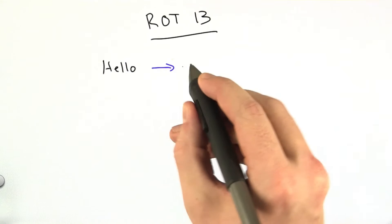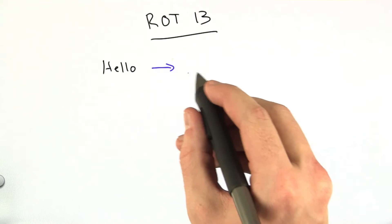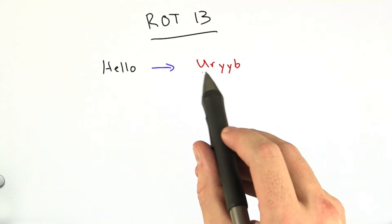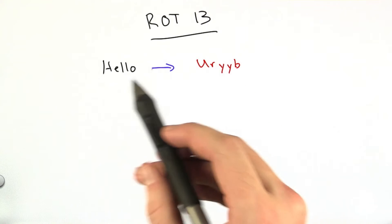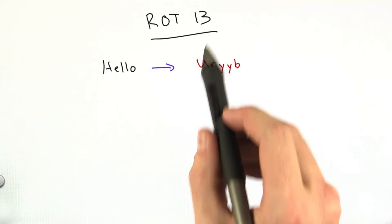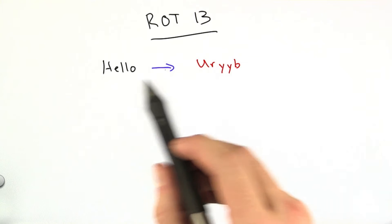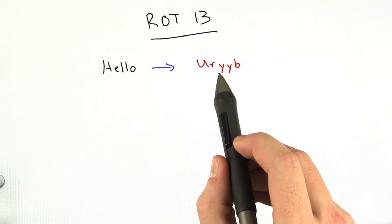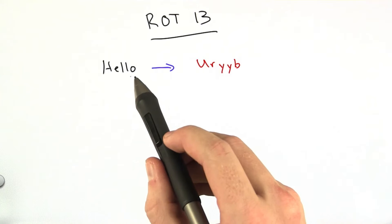Okay, if I were to take this string hello and apply rot13 to it, it would look like this: U, R, Y, Y, B. And what I've done is I've incremented every letter by 13. So H becomes U, E becomes R, L becomes Y, L becomes Y, and O becomes B.